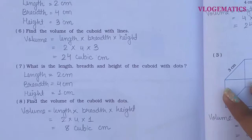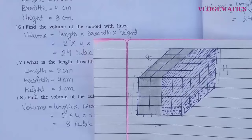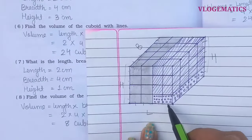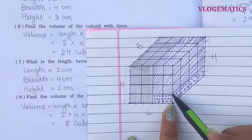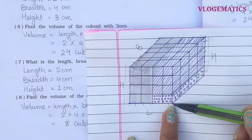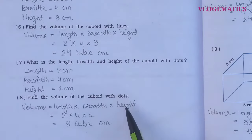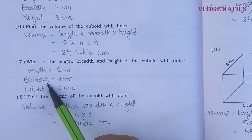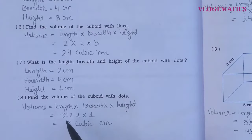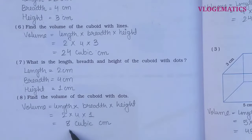Question 7: what is the length, breadth, and height of the cuboid with dots? Length is 2 cm, breadth is 4 cm, and height is 1 cm. Question 8: find the volume of the cuboid with dots. Using length × breadth × height: 2 × 4 × 1 = 8. So the volume of the cuboid with dots is 8 cm cubes.